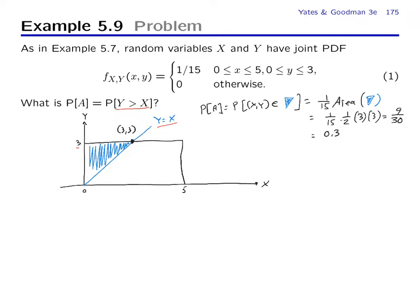This technique works because the density is uniform. But sometimes there will be homework problems with more complicated PDFs that are not uniform over the region, and you'll actually have to set up an integral to solve this. To set up an integral, you write P(A) as the integral over the region A of the joint PDF of x and y dx dy.